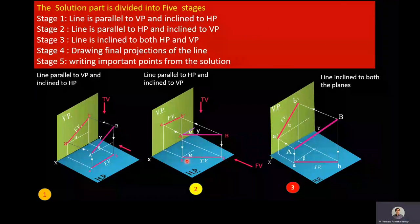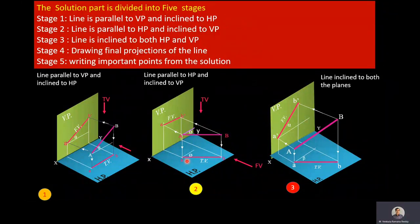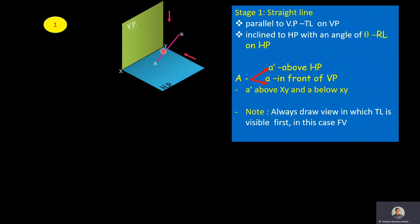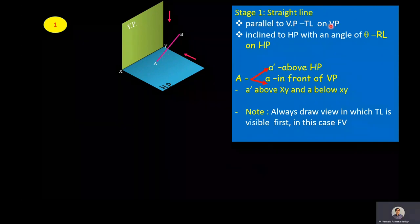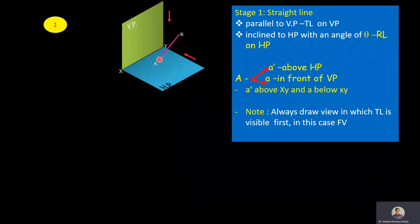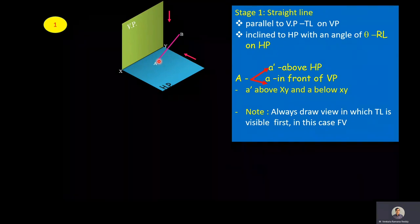Stage 1: the line is inclined to HP and parallel to VP. If the line is parallel to VP, then true length will be visible on VP, and since it is inclined to HP, reduced length appears on HP. With end A above HP and in front of VP, front view A' is above XY line and top view A is below XY line. Always draw the view in which true length is visible first — in this case, front view.